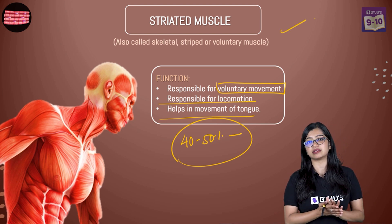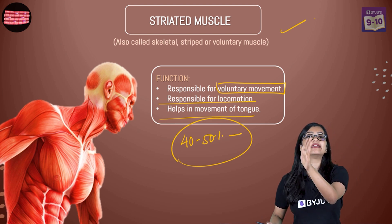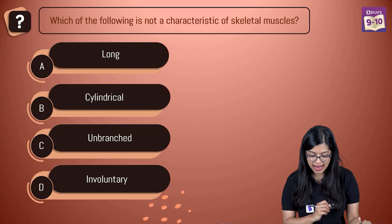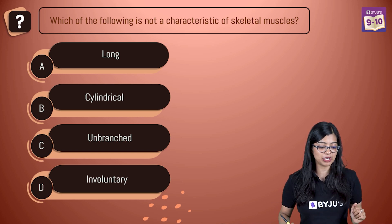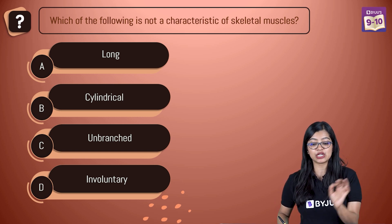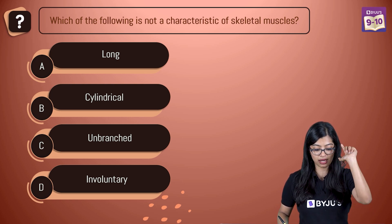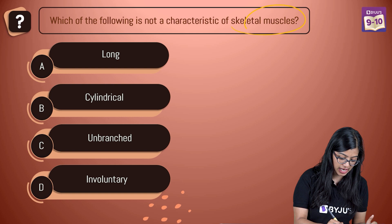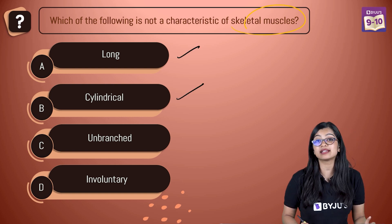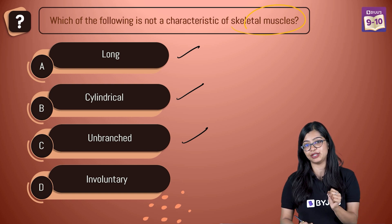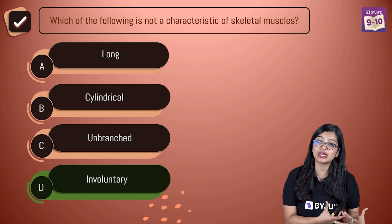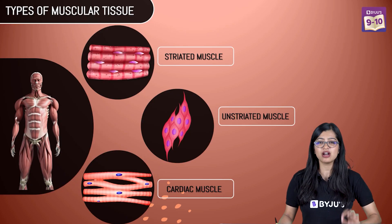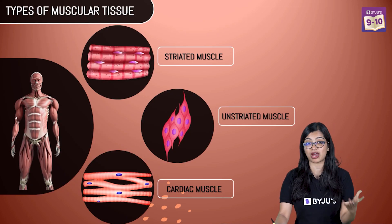When learning about muscles, you can always divide it into three parts: where we find them, what is their structure, and their function. Quick recap question: which among the following is not a characteristic of skeletal muscles? Long, cylindrical, unbranched, or involuntary? Skeletal muscles are elongated, cylindrical, unbranched, and multi-nucleated — and they are voluntary. So 'involuntary' is not a characteristic of skeletal muscles.